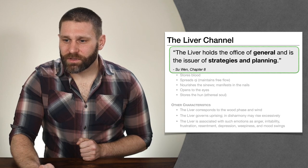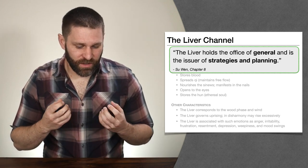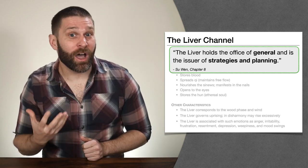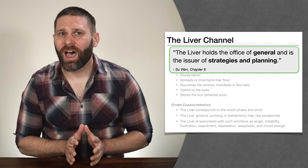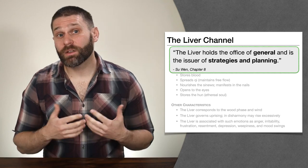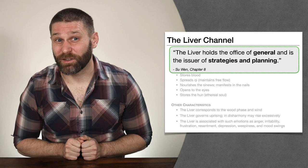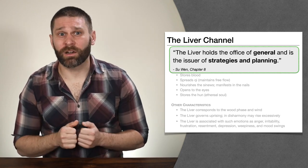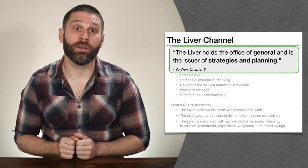When we say the liver holds the office of general, on the one hand we can think of this in terms of our patients. You might have a patient who comes in and is maybe angry, likes to give orders, or dictates the treatment to you — saying 'I want this point here and this point here.' Sometimes you have people who like to have a plan but aren't very flexible when those plans change, or people who just have no plan and are unable to plan or strategize. If you see a person like this, you might think this person is a liver person and you might want to address some issues on the liver channel.